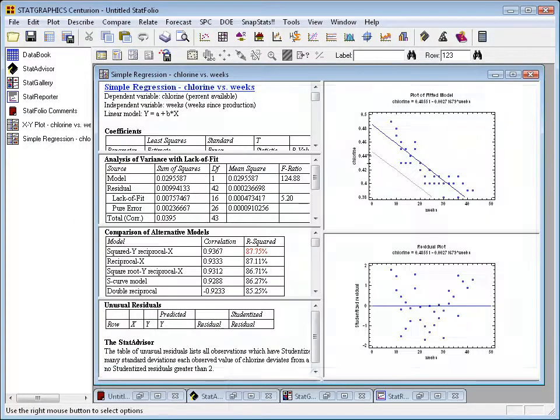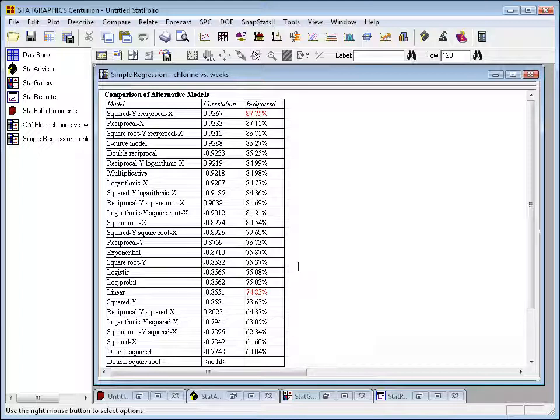Let's double-click to put that table away and go down to the comparison of alternative models. Here you see a list of all 27 models sorted in decreasing order of R squared. Now, R squared measures the percent of the variability in Y that's been explained by the model. If you look down at least halfway through the list, you'll see the linear model. That had an R squared of slightly less than 75%. In fact, there's a number of models up toward the top that have R squareds much higher than the linear model. There is, for example, the squared Y reciprocal X model at almost 88%, a reciprocal X model a little bit less than that, and a whole lot of different models that beat the linear model.